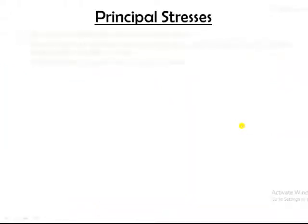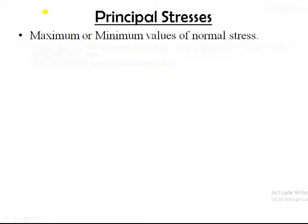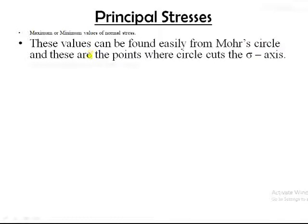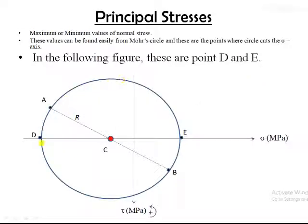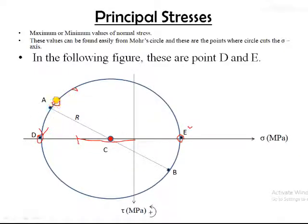Now we have to calculate the principal stresses. Principal stress is the maximum or minimum value of normal stress. These can be found from the Mohr's circle at the points where the circle cuts the normal stress axis. In our case, the circle cuts the normal stress axis at points D and E. The coordinates of D and E give the maximum and minimum values of normal stress — that is, the principal stresses.